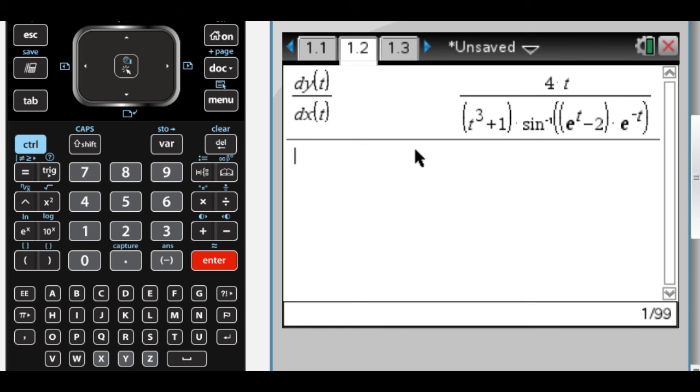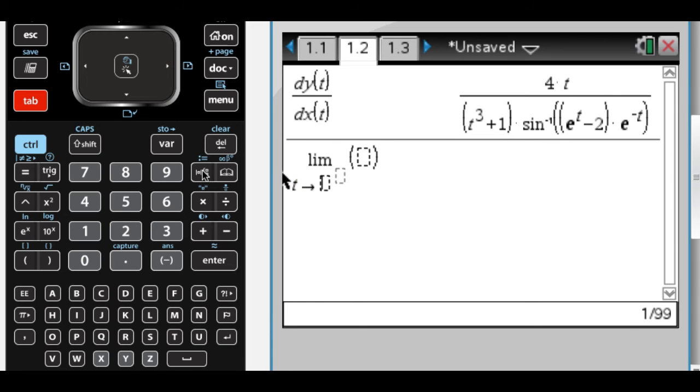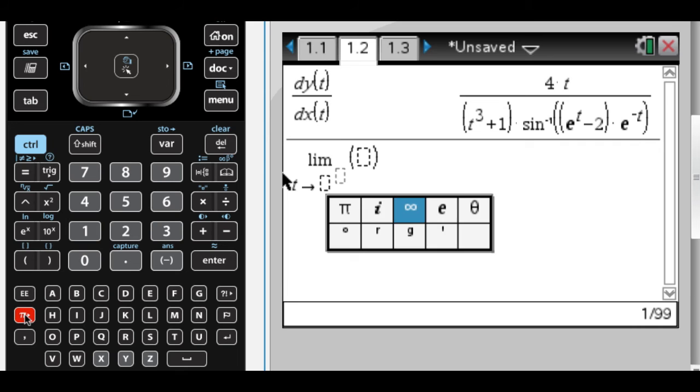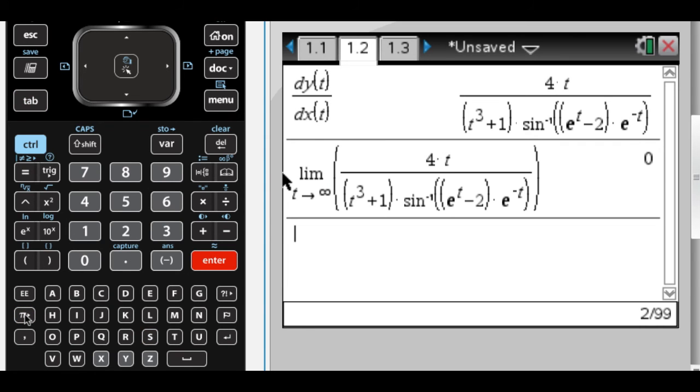And then what I need to do is I need to take the limit as t approaches infinity of this. This is a calculator question, which is weird, because certain calculators would appear to have an advantage on this question. What I'm going to do here is take the limit as t approaches infinity of that previous function. And I get 0.